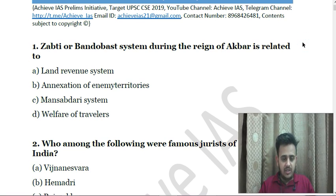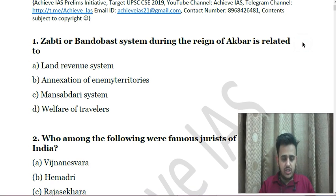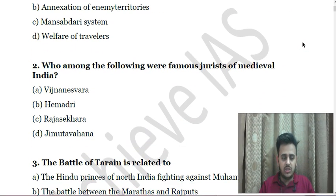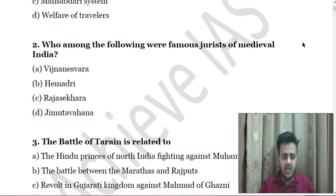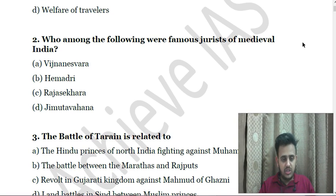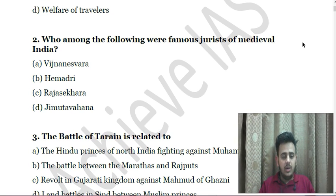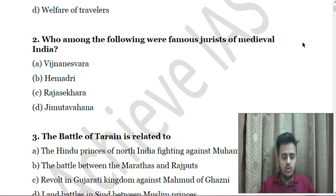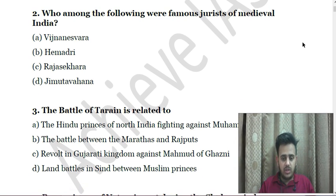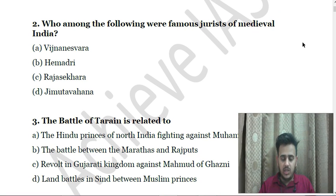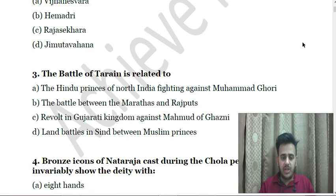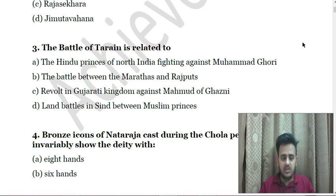Second question: Who among the following were famous jurists of medieval India? A. Vijnyaneshwa, B. Hemadri, C. Rajashekhara, D. Jimutvahana. You have to choose the correct answer — you can pause the video and think about it. Third question: The battle of Tarain is related to — A. The Hindu princes of North India fighting against Mohammed Gori, B. The battle between Marathas and Rajputs, C. Revolt in Gujarati kingdom against Mahmud of Ghazni, D. Land battles in Sind between Muslim princes.